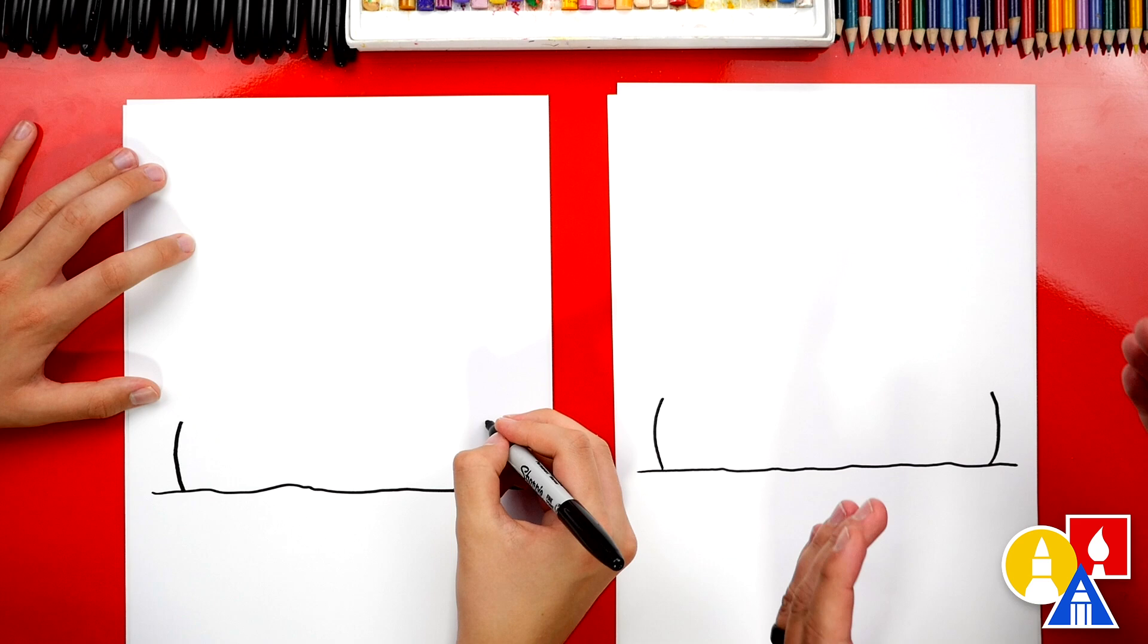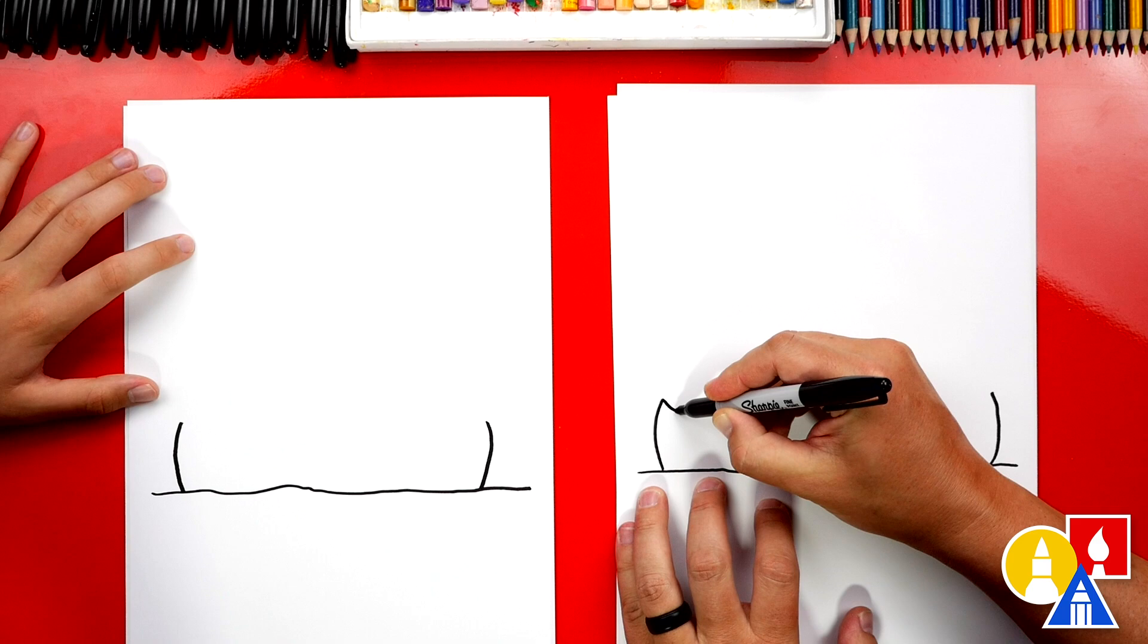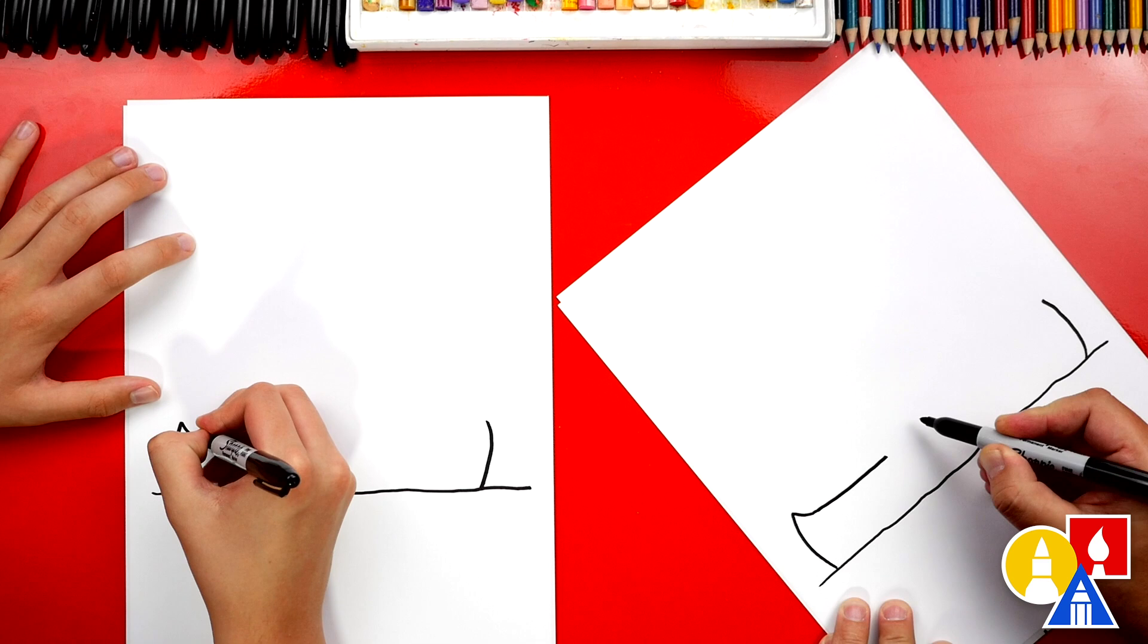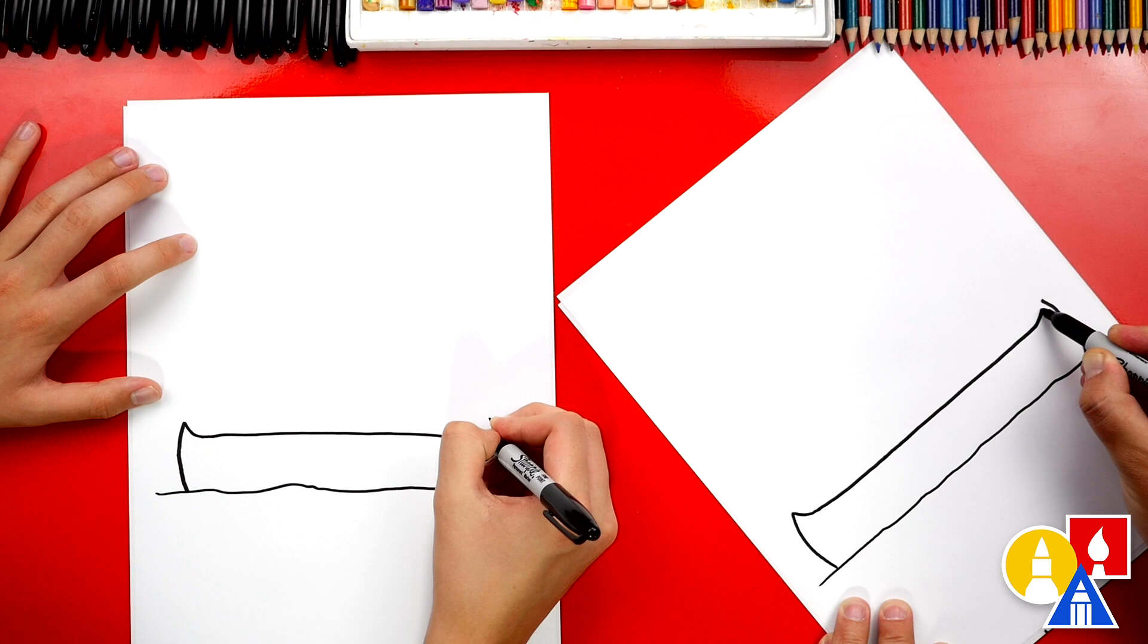Now on the front we're gonna draw a little curve that comes down like this. I'm gonna turn my paper sideways and then we're gonna go straight across after the curve and then we're gonna curve back up towards the back of our canoe.